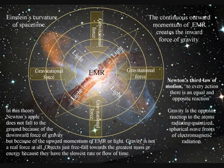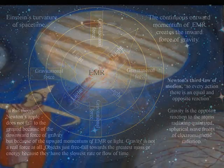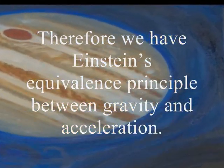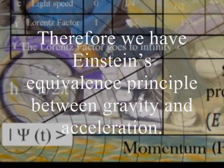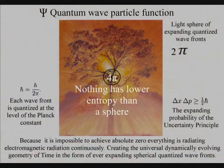In this theory, gravity is a secondary force to the electromagnetic force. Objects just freefall towards the greatest mass or energy because it has the slowest rate that time flows.